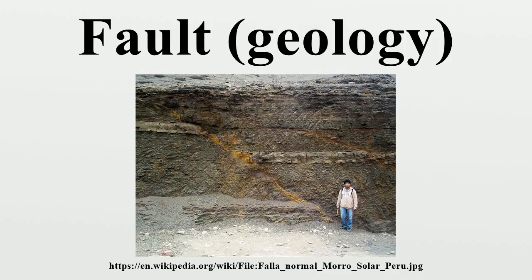A fault which has a component of dip-slip and a component of strike-slip is termed an oblique-slip fault. Nearly all faults will have some component of both, so defining a fault as oblique requires both dip and strike components to be measurable and significant. Some oblique faults occur within transtensional and transpressional regimes; others occur where the direction of extension or shortening changes during deformation but earlier-formed faults remain active.